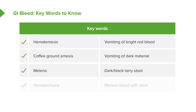Melena is dark black or tarry stool — it's due to digested blood from the stomach that passes through the intestines and comes out as a dark, black, tarry stool. It can also be described as slightly sticky, and once you've seen it, you'll recognize it. Hematochezia is maroon blood mixed with stool, most commonly seen with a diverticular bleed or a rapid lower GI bleed, or even a very brisk upper GI bleed where blood moves through the intestines quickly and appears as maroon blood in the stool.